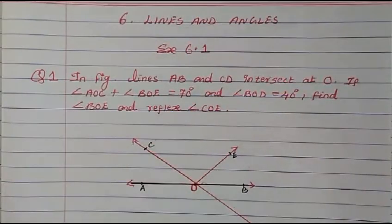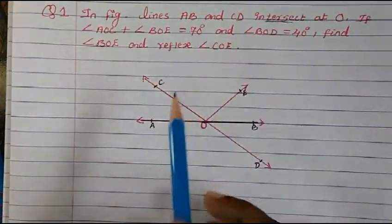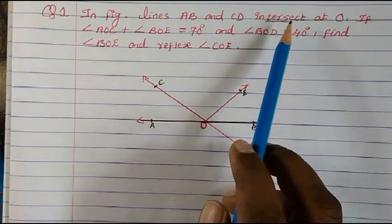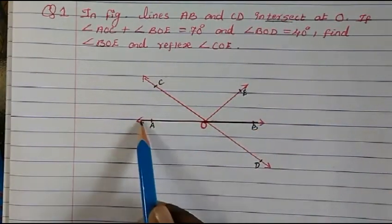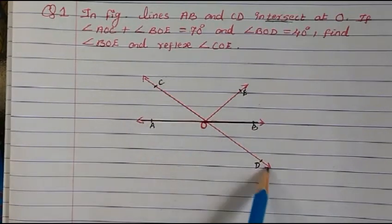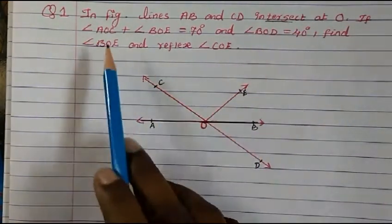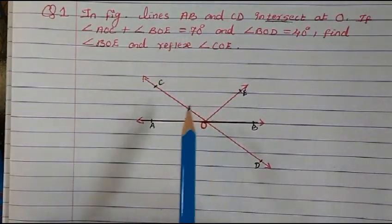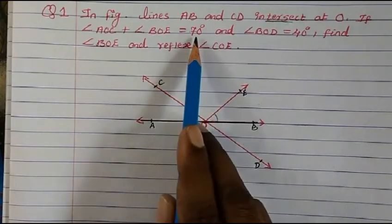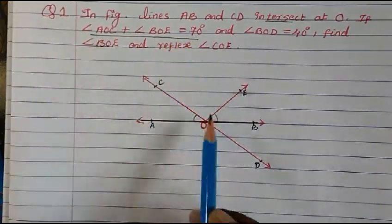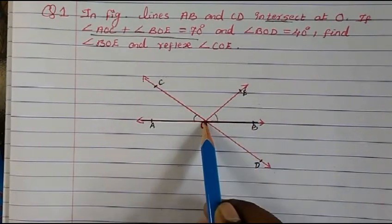Let's understand the problem properly. Lines AB and CD intersect at point O. We have already studied in the introduction that vertically opposite angles are formed when two lines intersect. So here, lines AB and CD are intersecting at O. Angle AOC plus angle BOE is equal to 70 degrees, and angle BOD is 40 degrees.